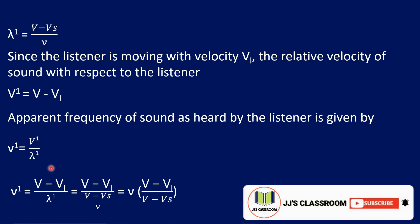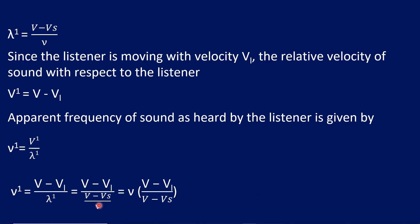V dash is V minus Vl, and lambda dash is V minus Vs divided by nu. Substituting and simplifying reciprocally, the apparent frequency nu dash is equal to nu multiplied by V minus Vl divided by V minus Vs. This is the apparent frequency of sound as heard by the listener.